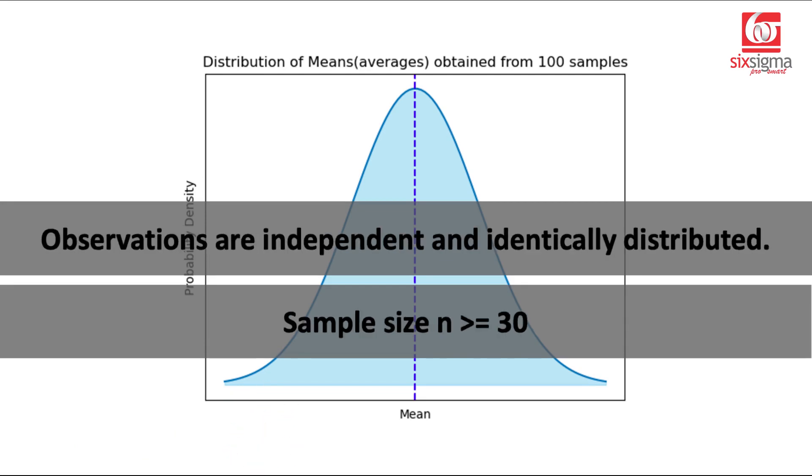A couple of things to be known for central limit theorem to hold good. We assume that these observations that we've collected are independent and identically distributed. So there is no influence of one observation on the other and they follow a similar distribution. They come from the same parent population.